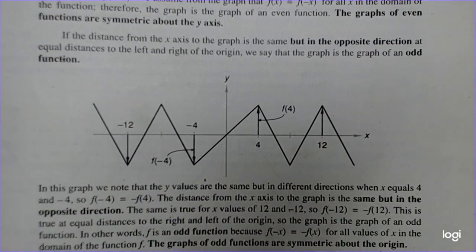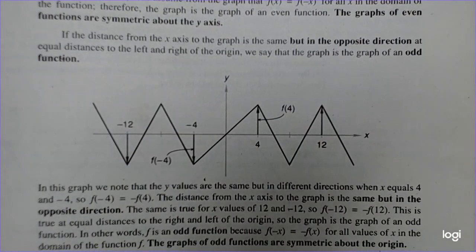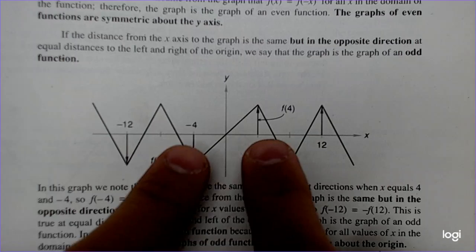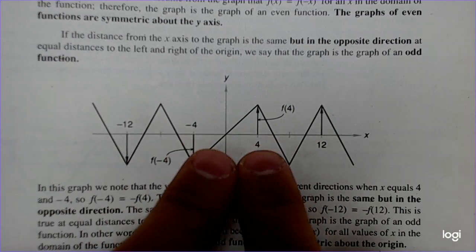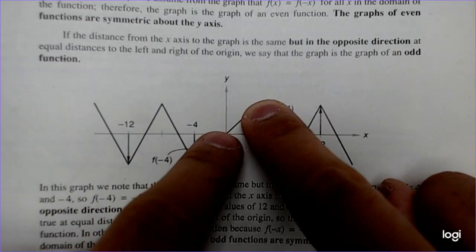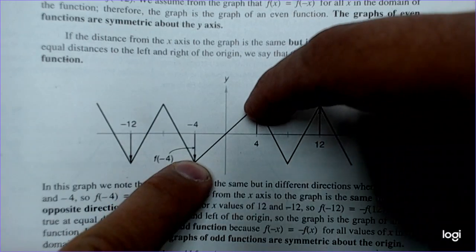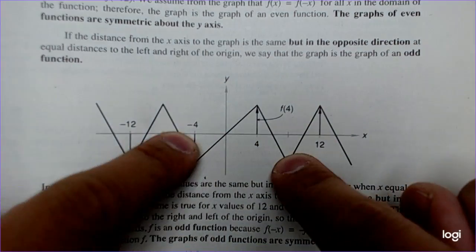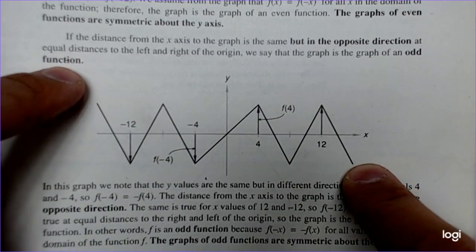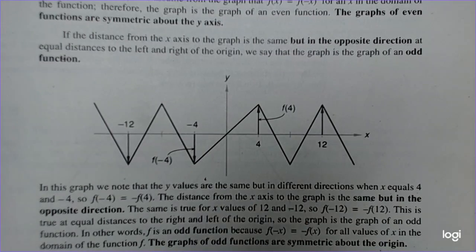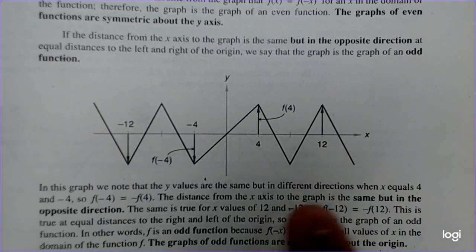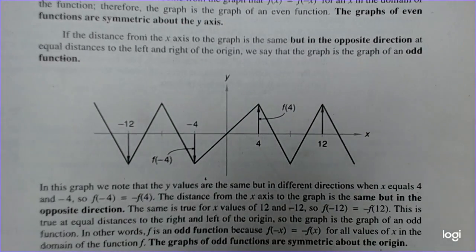Now what we have here is an odd function. Odd functions are actually symmetric about the origin. There's no real way to fold it to show that symmetry, but we can see the trend. Between zero and negative four they're going to do opposite things: between zero and positive four it's rising, between zero and negative four it's dropping. Then between fours and twelves, the positive side begins to drop and the negative side begins to rise — they do opposite movements.